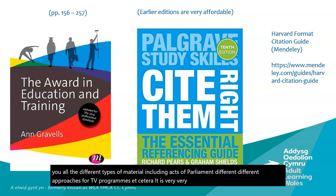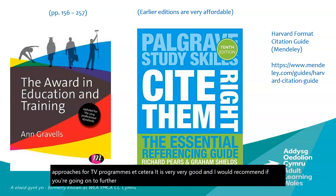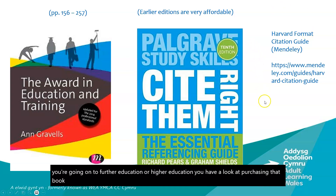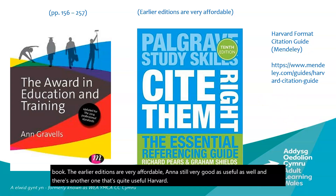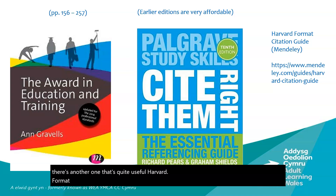I would recommend that if you're going on to further or higher education, you have a look at purchasing that book. Earlier editions are very affordable and still very useful. There's also another one worth knowing: the Harvard Format Citation Guide from Mendeley — just go to mendeley.com and look for their citation guide.